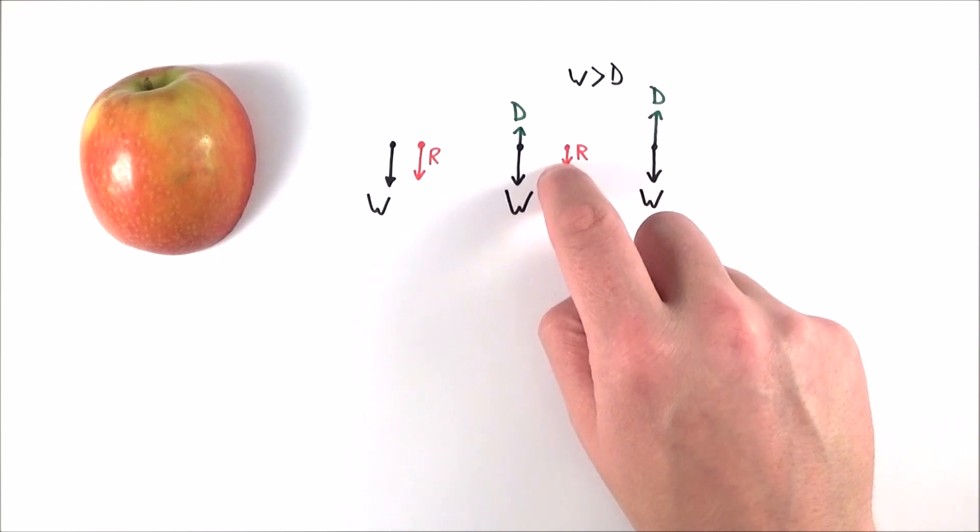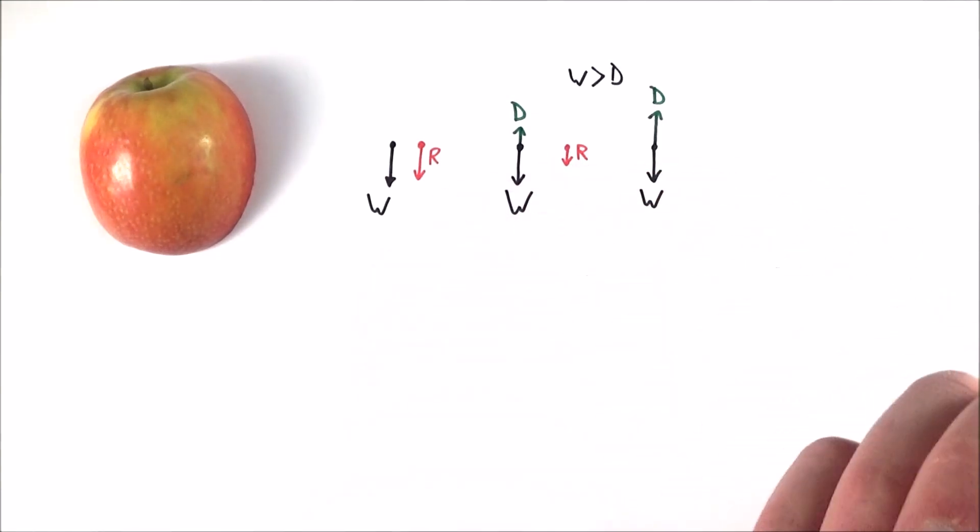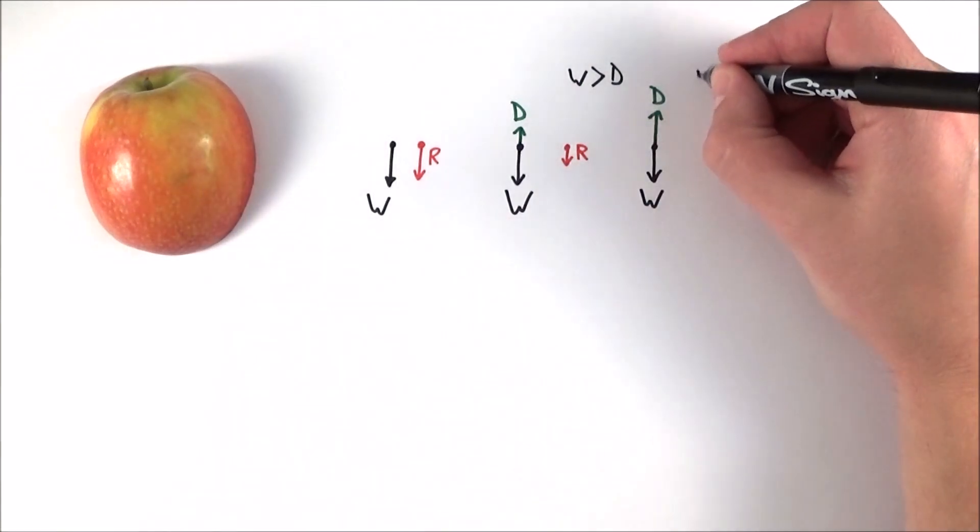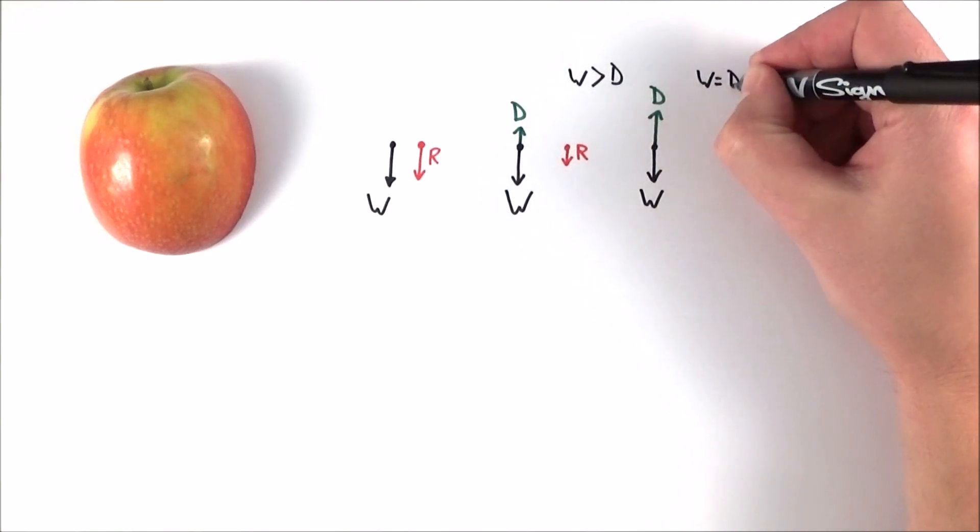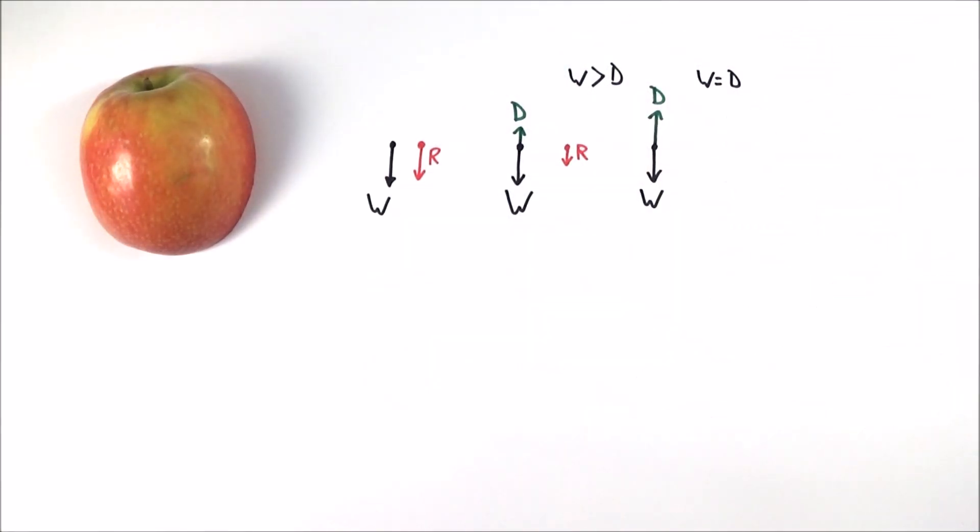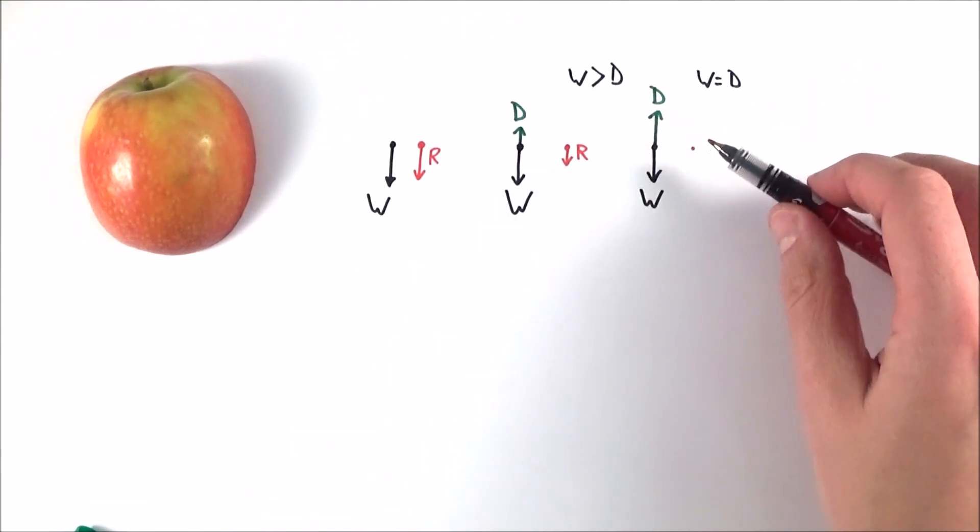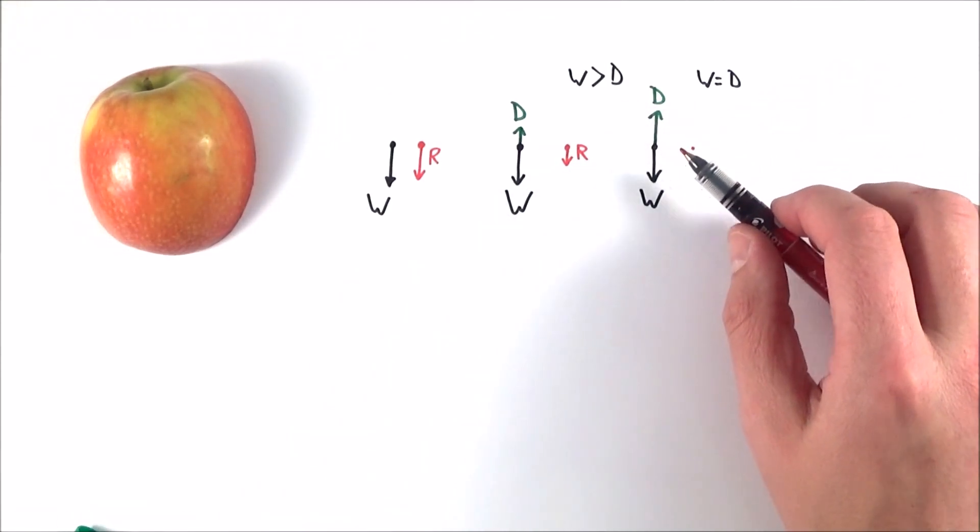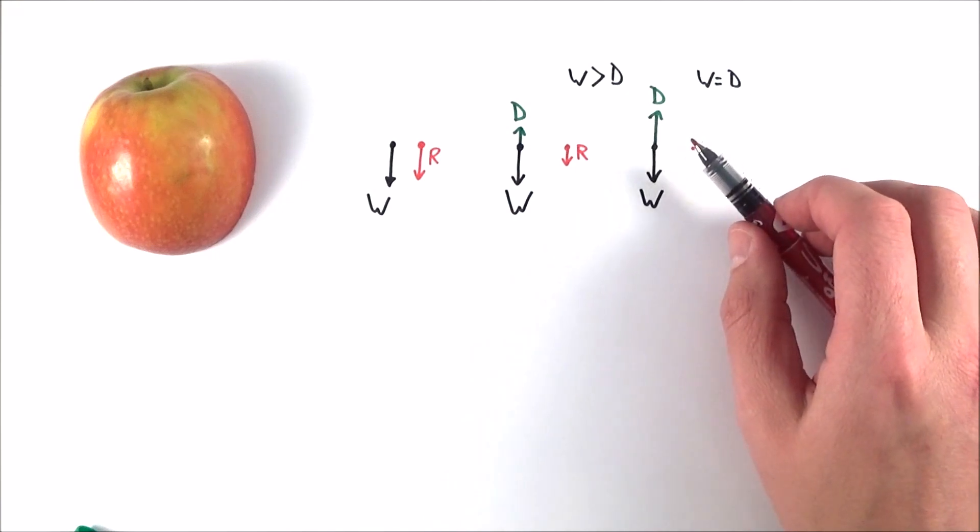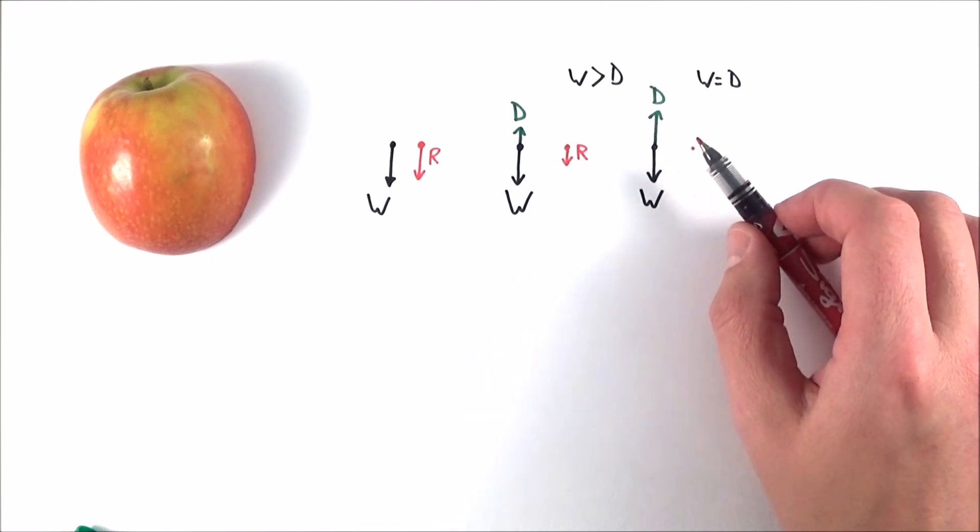Remember, we have an acceleration here which makes it go faster. When we have a greater velocity, we also have a greater drag force. At this stage here, what we find is that the weight is equal to the drag force but they're in opposite directions. This means that the resultant force is zero and therefore this object is in equilibrium, so it's still moving, it's just not accelerating. And this is what we call its terminal velocity.